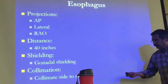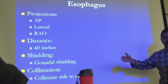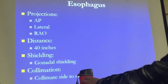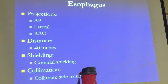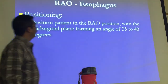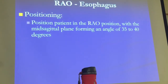If you're using CR, use a 14 by 17. If you're using DR, use the whole field and collimate side to side. Be careful — sometimes because of pathology or anatomy the esophagus can really curve, so make sure you include the entire esophagus. Positioning: start with the RAO. Position the patient RAO with the mid-sagittal plane forming an angle of 35 to 40 degrees from the table. Sometimes the RAO can be done prone, but it can also be done upright.